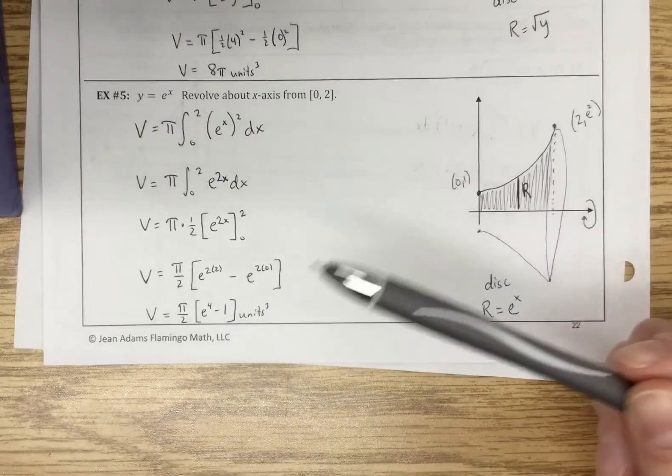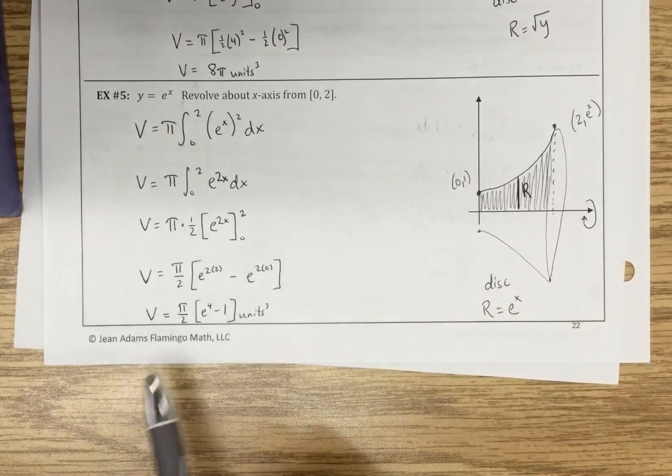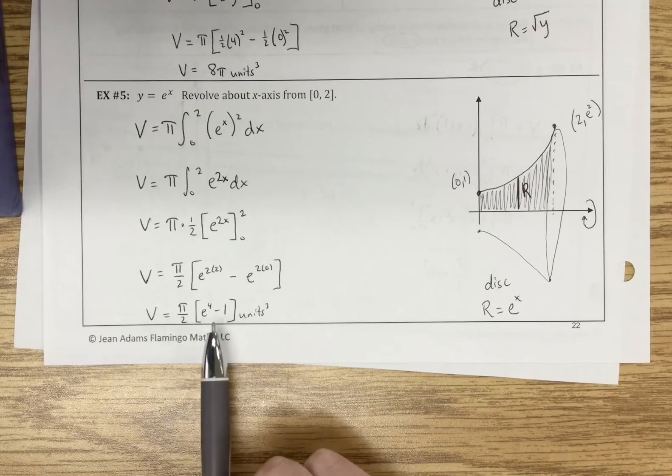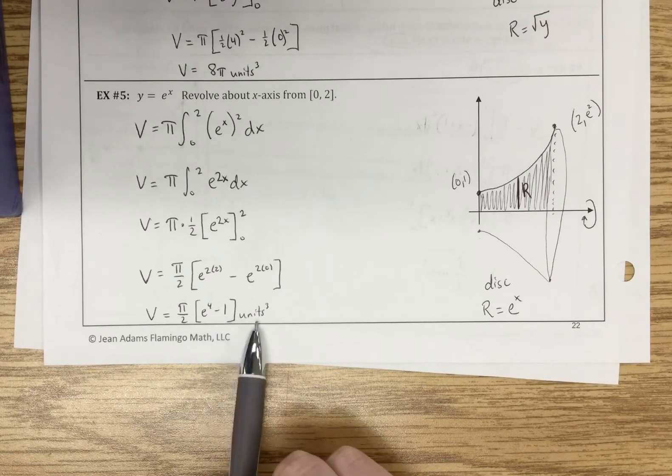Alright, cool. Plug in your bounds, and you end up with your volume being pi over 2 times e to the 4th minus 1 units cubed.